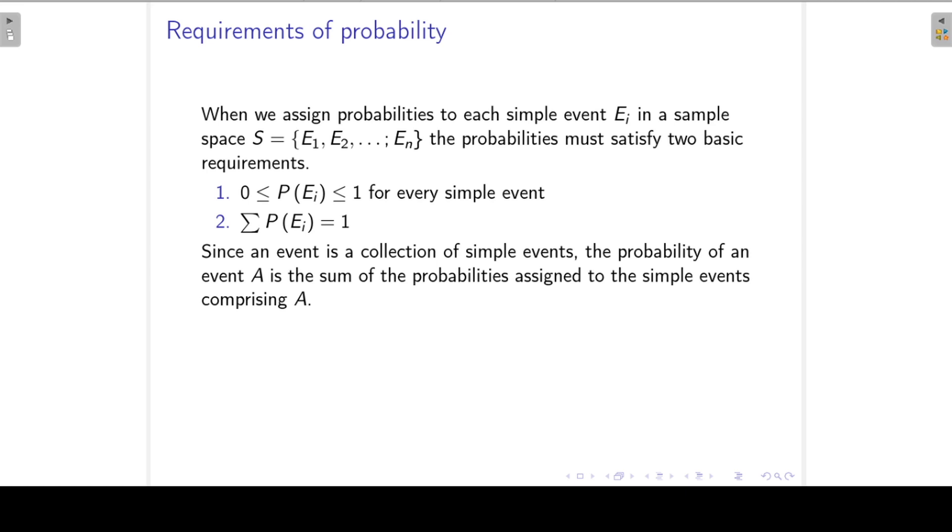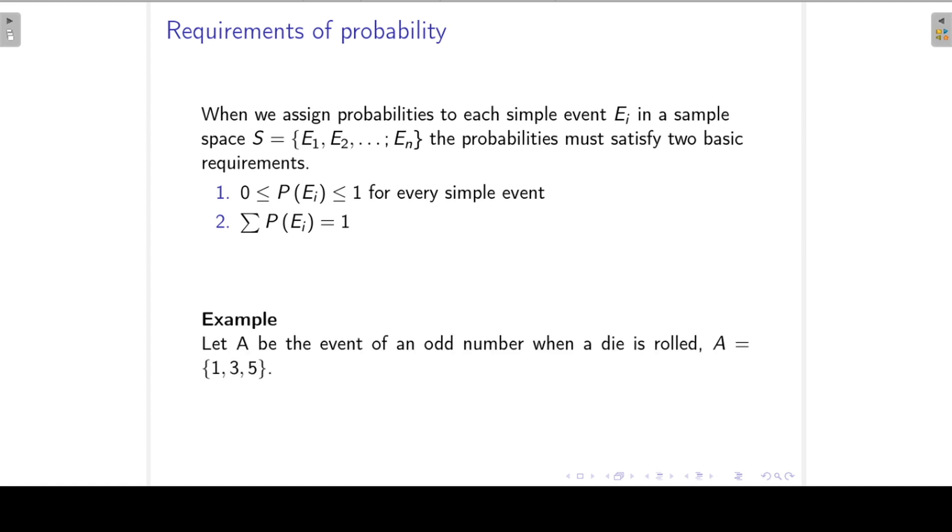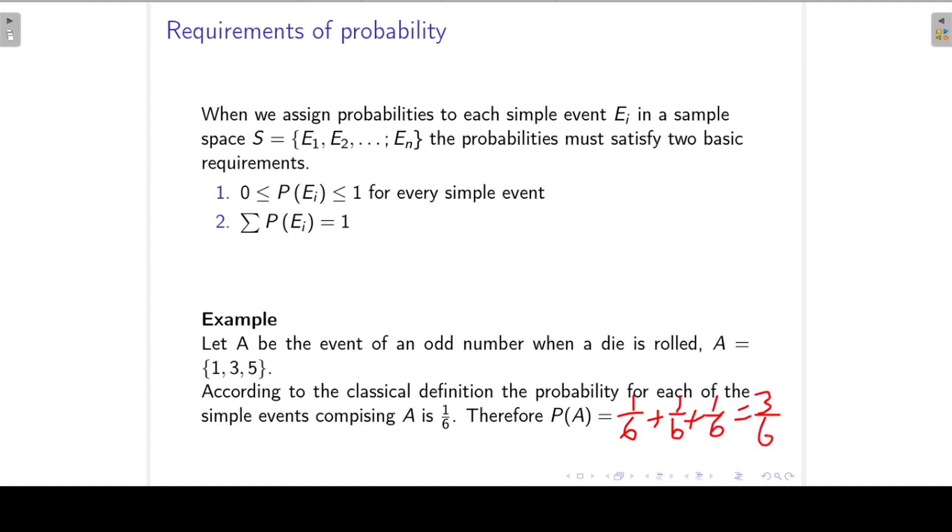Since an event is a collection of simple events, we can now use the probabilities of the simple events to find the probability of an event which is made up of simple events. For example, if event A is the sum, or rather the probability of event A is the sum of the probabilities assigned to the simple events comprising A. So if A is again the event to get an odd number, then we know, according to the classical definition, that the probability for each of the simple events comprising A is 1 over 6. Therefore, the probability of A is just the sum of the probabilities of these simple events. So it must be 1 over 6, plus 1 over 6, plus 1 over 6, plus 1 over 6, which is just 3 over 6.